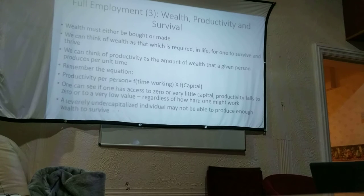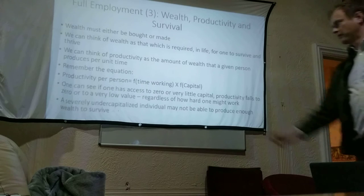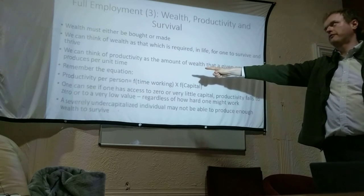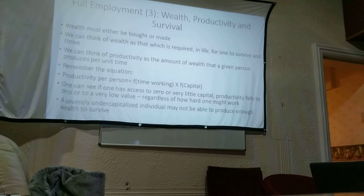Wealth must either be bought or it must be made. We can think of wealth as that which is required in life to survive and thrive — food is a form of wealth, theatre is a form of wealth. Above a certain level of wealth we're happy; below a certain level we're dead. We can think of productivity as the amount of wealth that a given person produces per unit time. Productivity per person equals a function of time working times a function of capital. One can see that if one has access to zero or very little capital, productivity falls to zero regardless of how much one works. The amount that people can make by laboring for themselves very much depends on the amount of capital they can access.